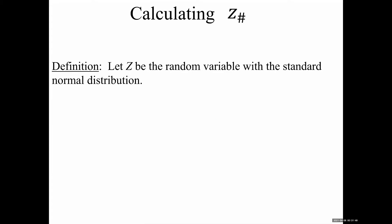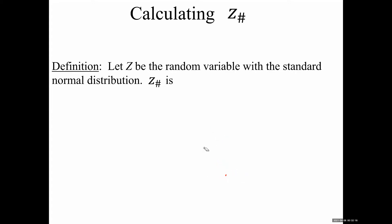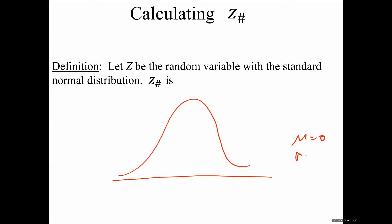The notation for the thing we're calculating looks like this: z with a small subscript number, such as z_0.05 or z_0.029. It has the letter z and a subscript that's going to be some small number. Z stands for the standard normal distribution — the bell curve where the mean is zero and standard deviation is one.